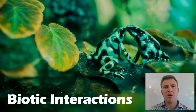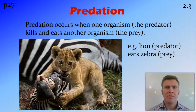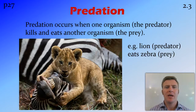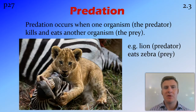In this video we're going to look at biotic interactions between organisms. The first one is predation, which is where one organism, usually an animal, called the predator, eats another animal, called the prey. An example of this is a lion eating a zebra — the lion is the predator and the zebra is the prey.